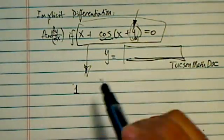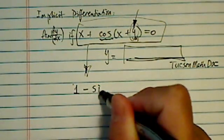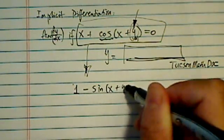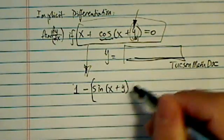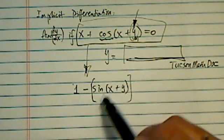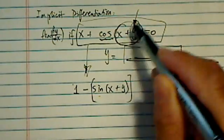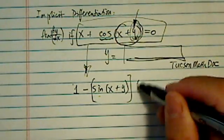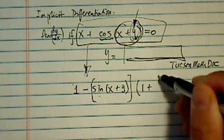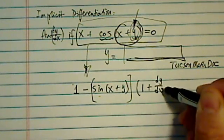And then for the cosine, it becomes minus sine. Now here we're going to have to use the chain rule because the derivative for the cosine becomes sine. And then you have to take derivative for the x plus y, not just the y term but x plus y term. So it becomes 1 plus dy/dx.